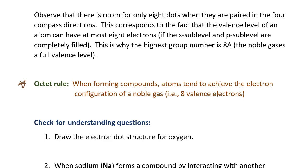There is one noble gas that doesn't have eight valence electrons: helium. Helium has atomic number two and only has two electrons. Hydrogen is atomic number one and has one valence electron. If it gains one more, it will have two electrons like the noble gas helium. So when hydrogen bonds to other atoms to create a compound, the hydrogen atom will end up with two valence electrons.